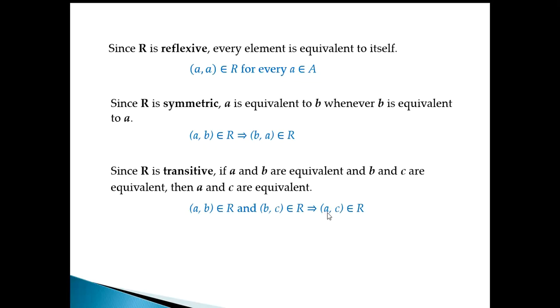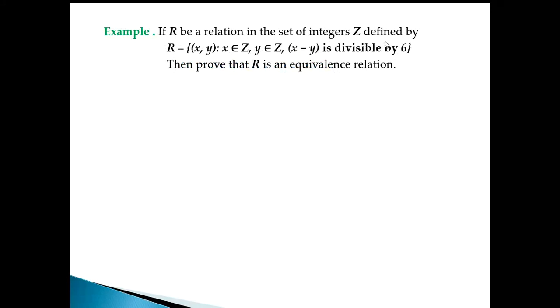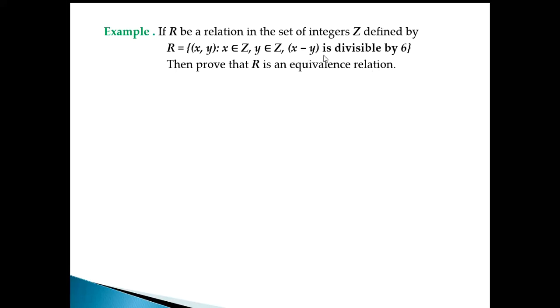If these three properties hold in any relation, it is called an equivalence relation. Now let's take an example. Let R be a relation on the set of integers Z defined by: the ordered pair (x, y) where x, y belong to integers and x minus y is divisible by 6.